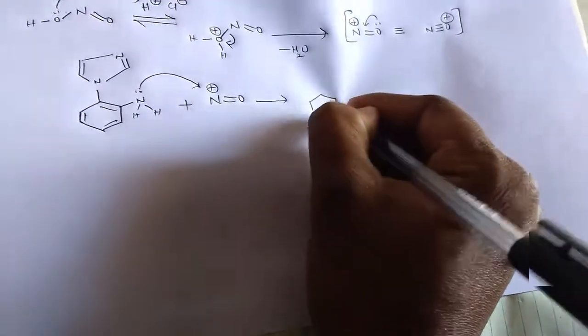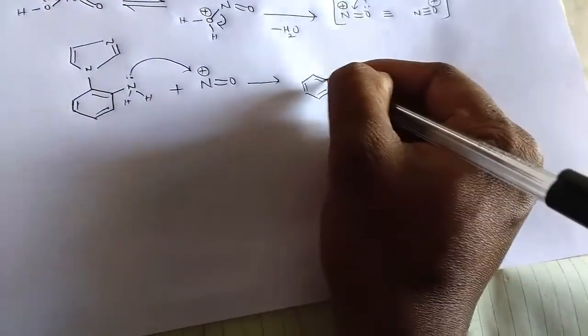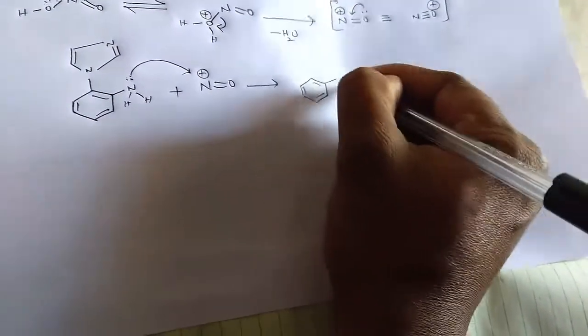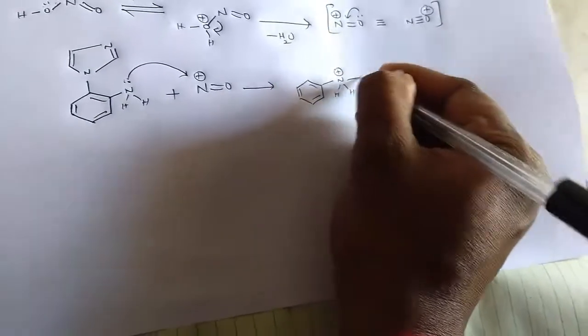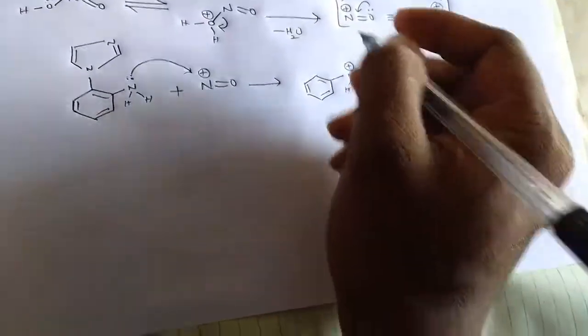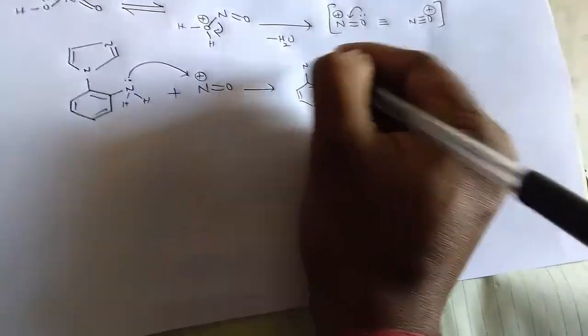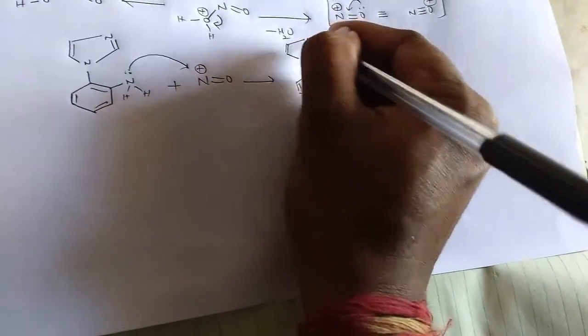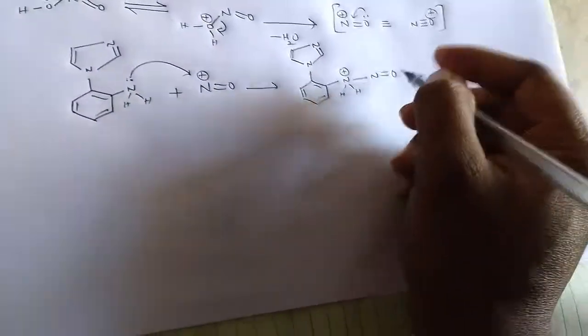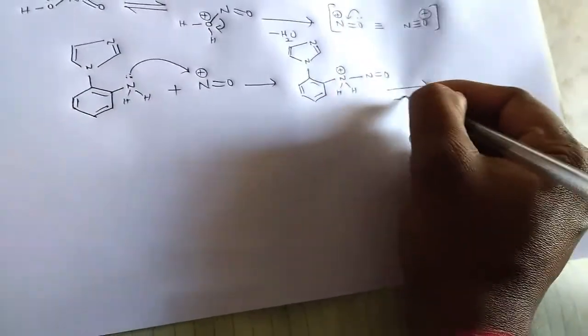The lone pair of electrons from the nitrogen react with NO+ and here is the formation of N double bond N double bond O. By the removal of water...